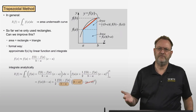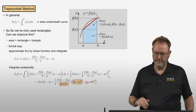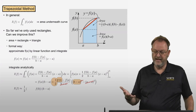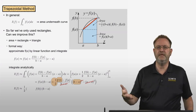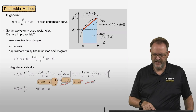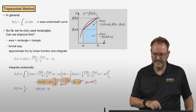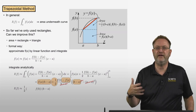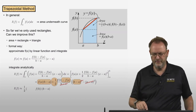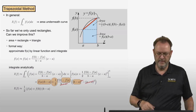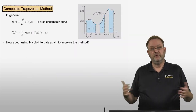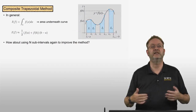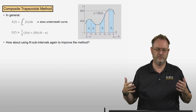Combining the terms: f(a)·(b-a) plus one-half·(f(b)-f(a))·(b-a) simplifies to one-half·f(b)·(b-a) plus one-half·f(a)·(b-a). So the integration formula using a first-order polynomial is: one-half times (f(a) + f(b)) times (b-a). This is called the trapezoidal method.